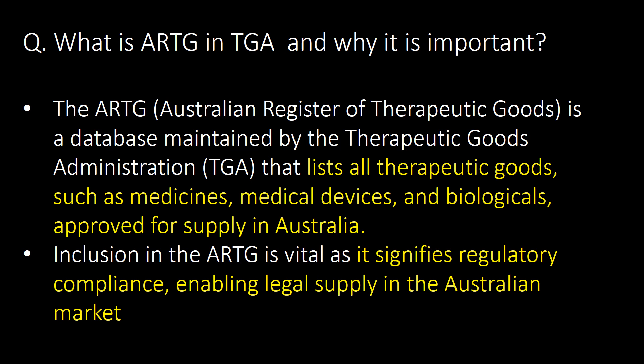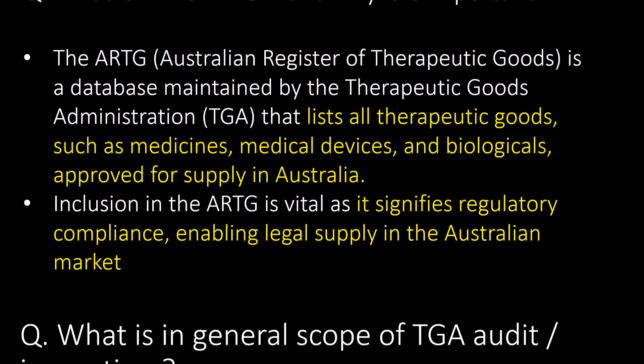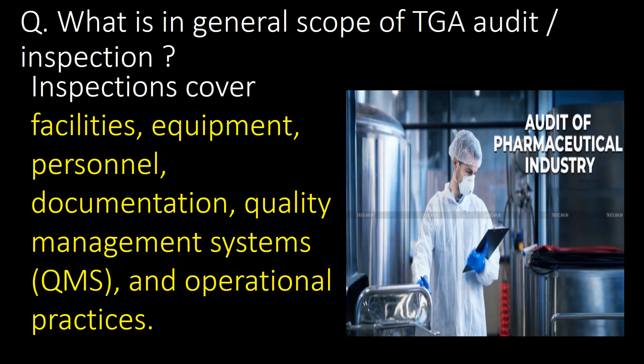What is ARTG in TGA and why is it important? The ARTG — that is Australian Register of Therapeutic Goods — is a database maintained by the TGA that lists all therapeutic goods such as medicines, medical devices, and biologicals approved for supply in Australia. Inclusion in the ARTG is vital as it signifies regulatory compliance, enabling legal supply in the Australian market.